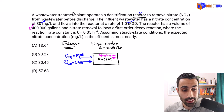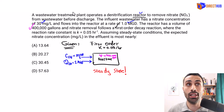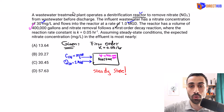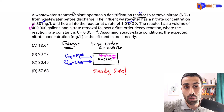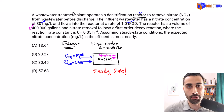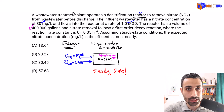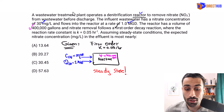Assume steady state — this is a common and important assumption. Steady state means there's no accumulation of mass. Think of it like a bathtub: whatever flow comes in comes out, the water level doesn't change. So the change in mass over time equals zero. The mass flow rate in equals the mass flow rate out. Q_in equals Q_out.